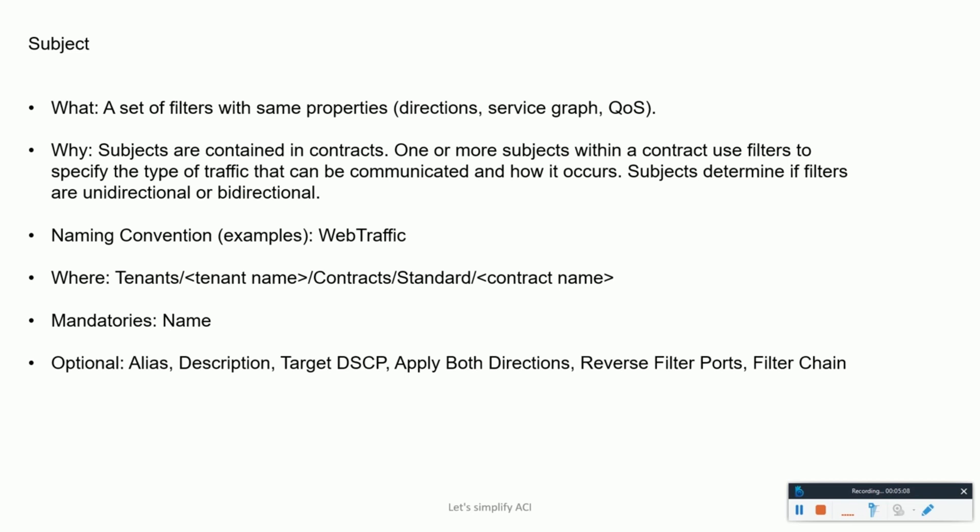Subjects are contained inside contracts. One or more subjects within a contract use filters to specify the type of traffic that can be communicated and how it occurs. For example, for HTTPS messages, the subject specifies the direction and the filters that specify the IP address type — such as IPv4 — the HTTP protocol, and the ports allowed. The subject defines the direction of those filters, and combined with filters, forms a contract.